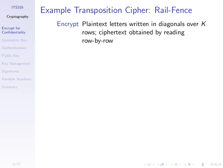With rail fence, you take your plaintext letters and write them in rows. You write the first letter on the first row, the second letter on the second row, the third on the third row, and the kth letter on the kth row, then go back to the first row. You then get the ciphertext by reading row by row. Let's show an example.